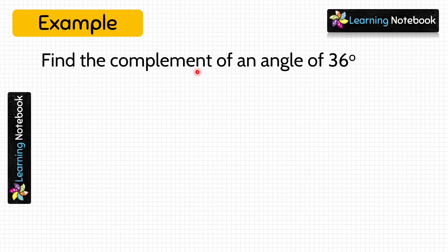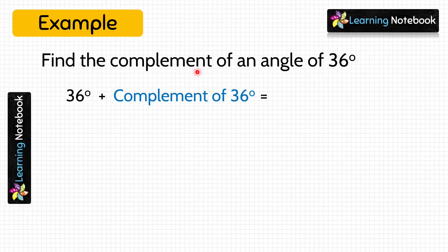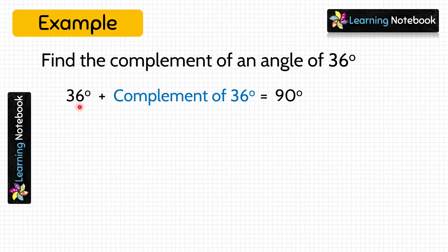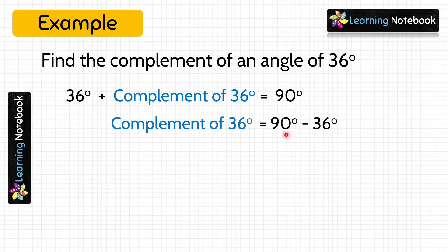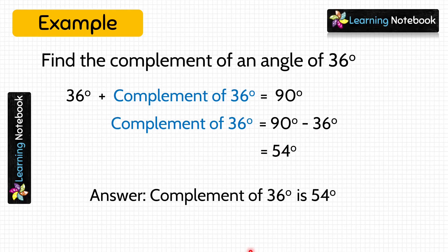So this means the sum of their measures should be equal to 90 degrees. We will write: 36 degrees plus Complement of 36 degrees equals 90 degrees. Now, to find the Complement of 36 degrees, we will take 36 degrees to the right-hand side, that means we will do 90 minus 36, which is equal to 54 degrees. So the Complement of 36 degrees is 54 degrees.